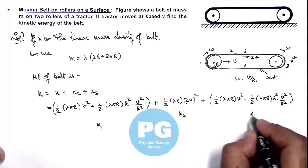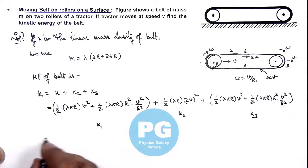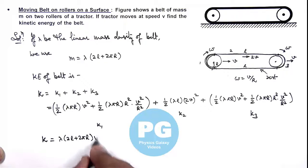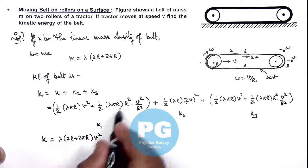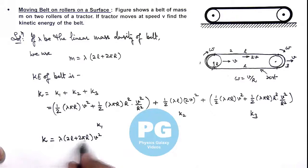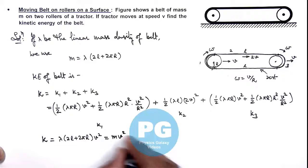Now if we simplify these terms and calculate the value of k, we'll be getting finally λ multiplied by 2l plus 2πr multiplied by v squared. You can simply open these terms and simplify, you'll get it. And λ multiplied by 2l plus 2πr we can write as m, so this mv squared which is the result of this problem.